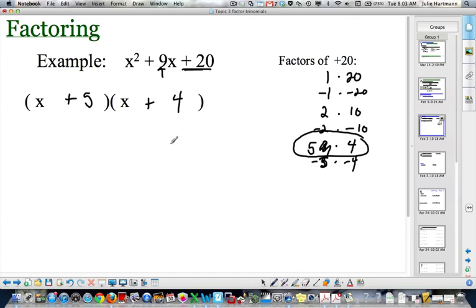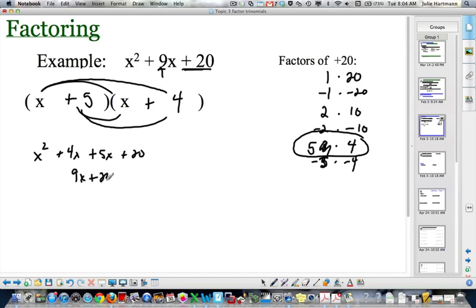and guess what? You can always figure out if you're right just by multiplying it back out. Okay? x times x is x squared. x times 4 is 4x. 5 times x is 5x. 5 times 4 is 20. 4x plus 5x is 9x. And that is, match what I started with, so that checks. Okay? So, you can always, always check these. Alright.